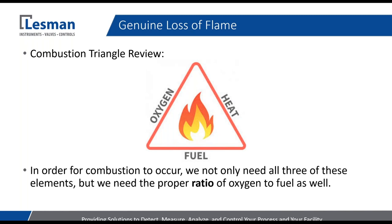Now for a genuine loss of flame — I had a flame in my chamber and the flame went away. Let's do a combustion triangle review. You've got your oxygen, usually in the form of combustion air; your fuel, usually a hydrocarbon like natural gas; and your heat source — during the light-off sequence it's the spark igniter, and during run it's the continued heat from the chemical reaction. In order for combustion to occur, you need not only all three of these elements but also the proper ratio of oxygen to fuel.